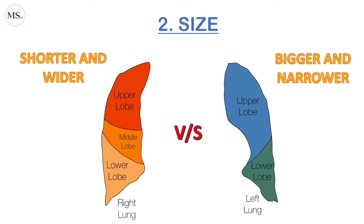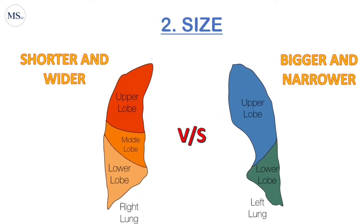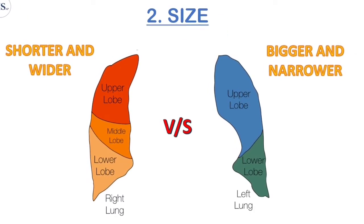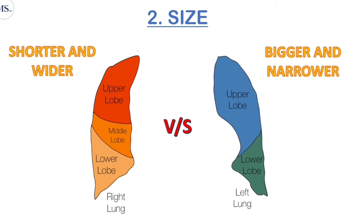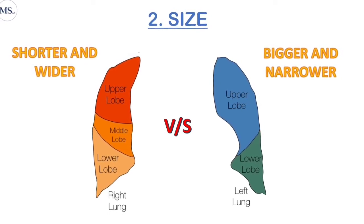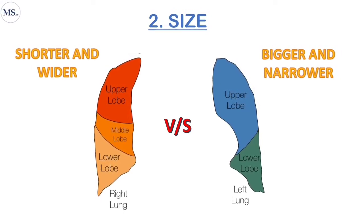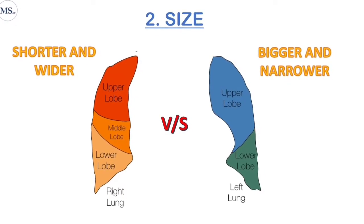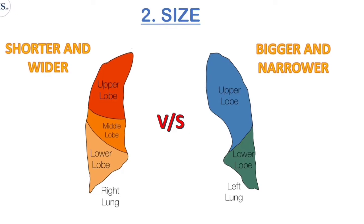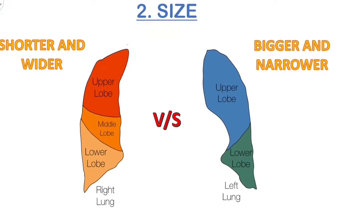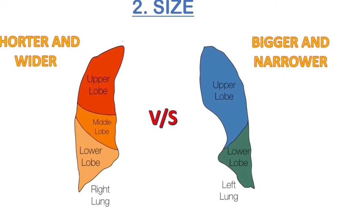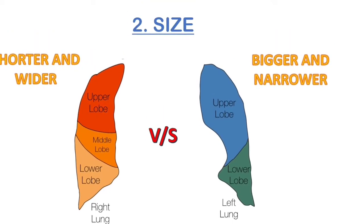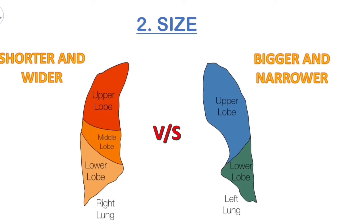The second difference is size. The right lung is shorter and wider, and the left lung is longer and narrower. The right lung is broader in shape compared to the left lung because the heart is located mostly on the left side, so the left lung cannot be as broad in shape.